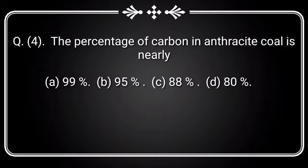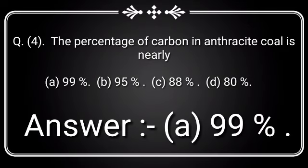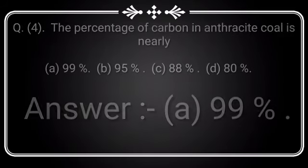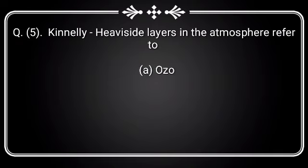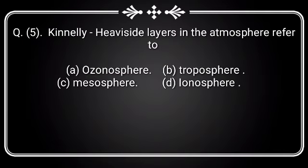Question 4: The percentage of carbon in anthracite coal is nearly — Option A: 99%, Option B: 95%, Option C: 88%, Option D: 80%. Answer is Option A: 99%.